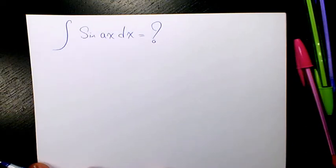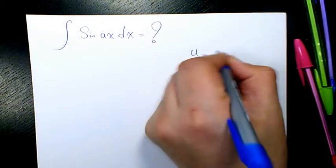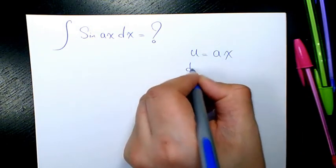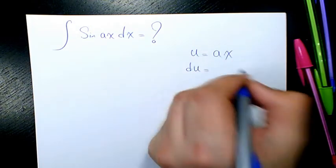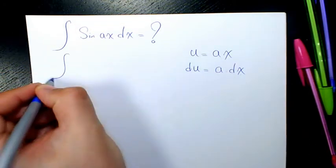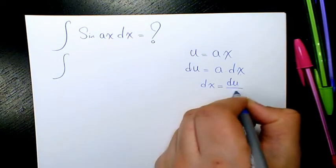What's up guys, this is Massey. Welcome to another video. In this video, I want to show you how to find the integral of sin(ax)dx. This is a very simple question. I'll use the substitution method. Let u equal ax. When you find the derivative of u, that will be du. The derivative of ax is a times dx, so dx equals du over a.